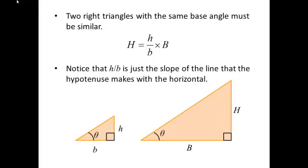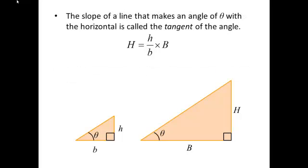Now notice that little h over b is just the slope of the line the hypotenuse makes with the horizontal. h is the rise, b is the run, so you're looking at rise over run. Well that slope, the slope of a line that makes an angle of theta with the horizontal, is called the tangent of that angle. So instead of writing h over b, we could just write tangent theta.